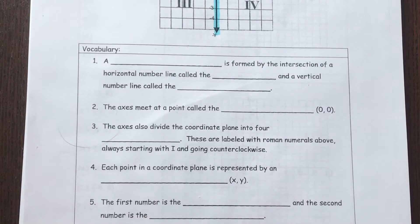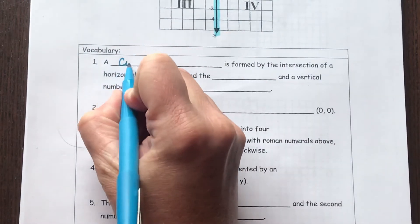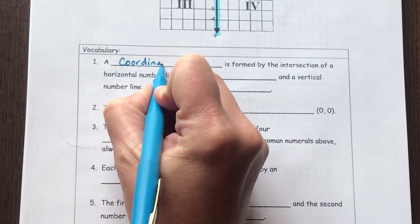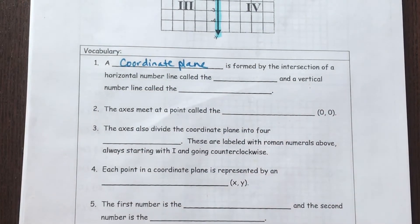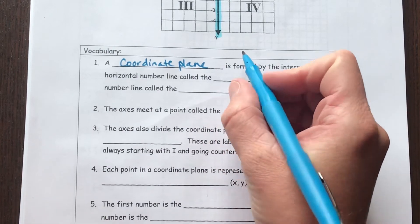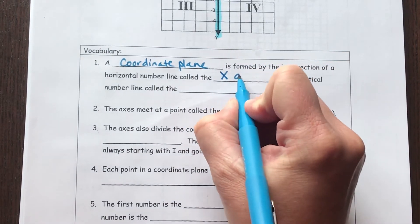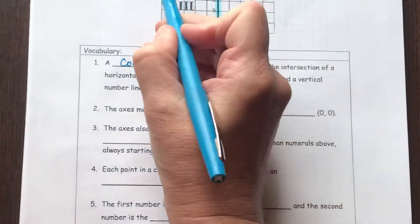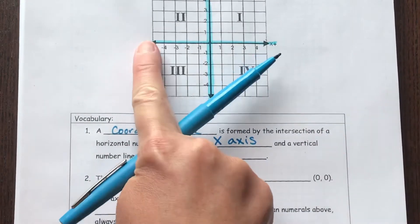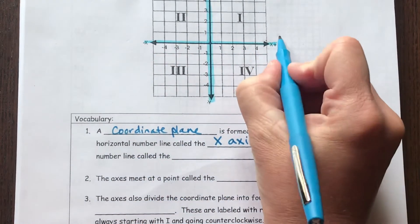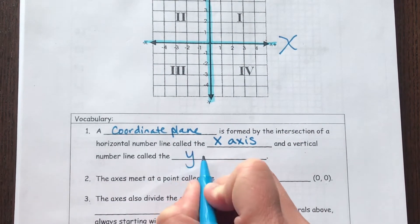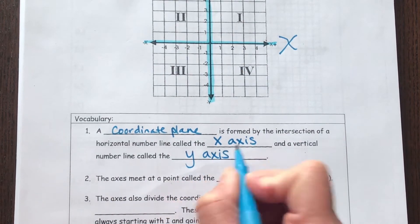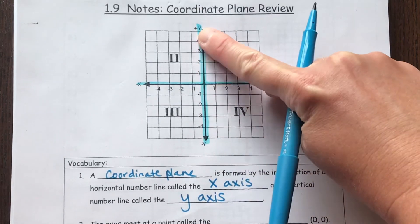So your first blank to fill in would be a coordinate plane. It's formed by the intersection of a horizontal line, and that horizontal line is called the X axis. And I showed you that up above here. This is our X axis. And the vertical number line is called the Y axis, and I showed you that going up right here.